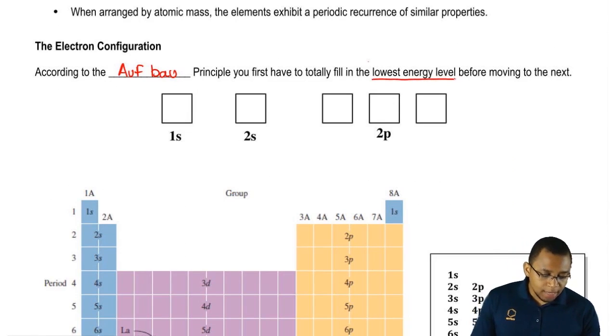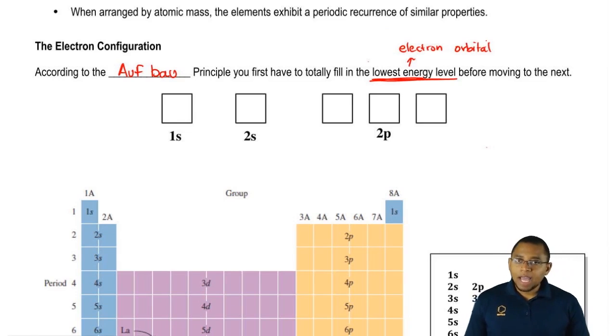What do I mean by lowest energy level? We have to completely fill in an electron orbital before we can move on to the next. Here we have 1s, 2s and 2p. Each of those represent different types of electron orbitals.